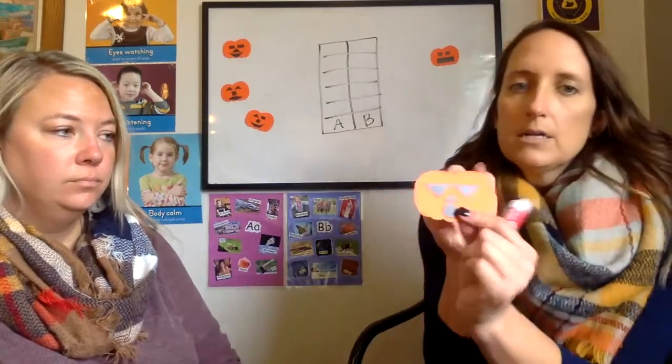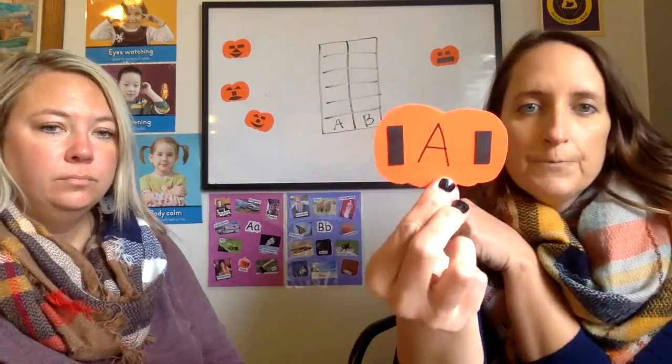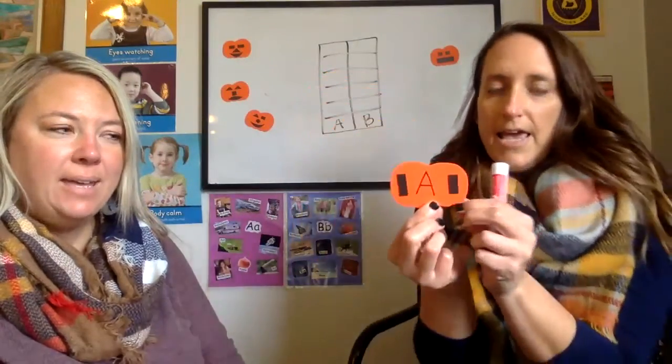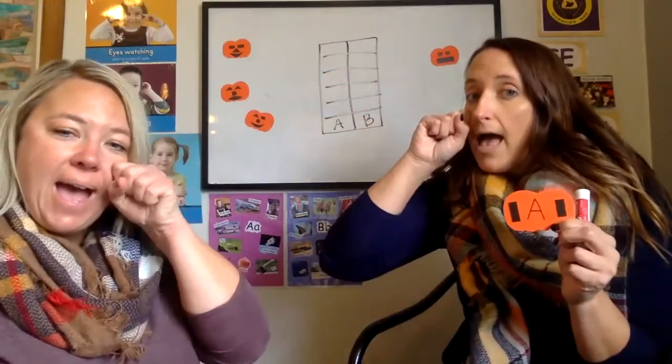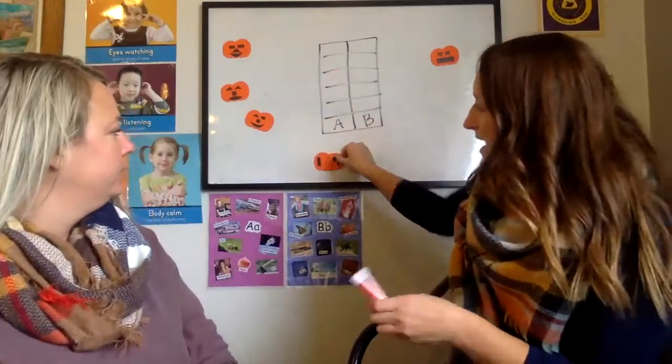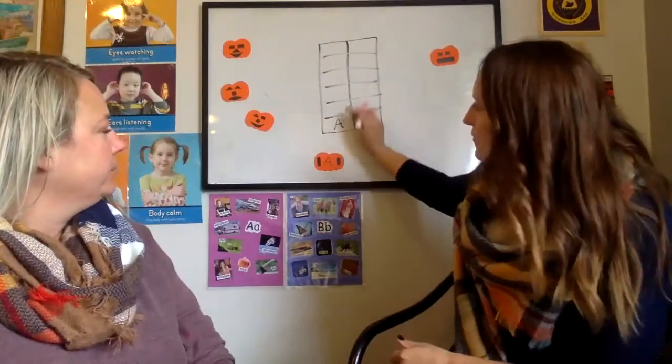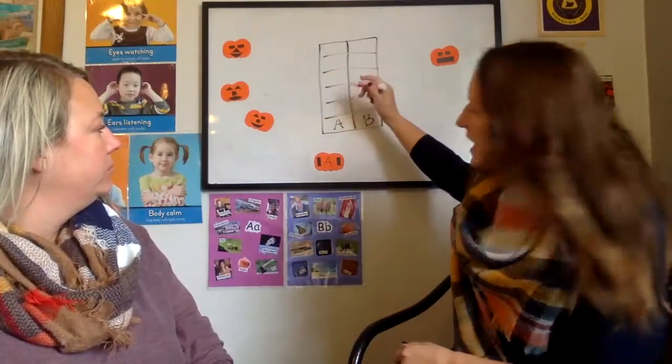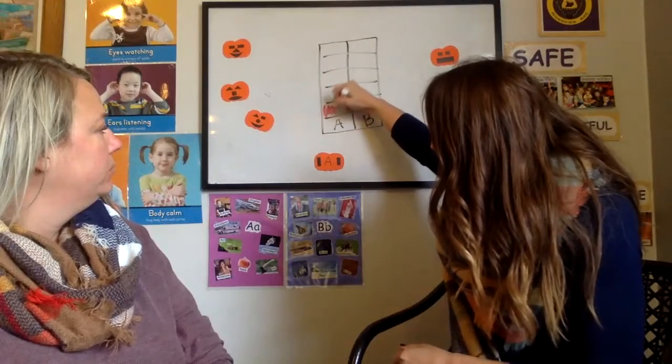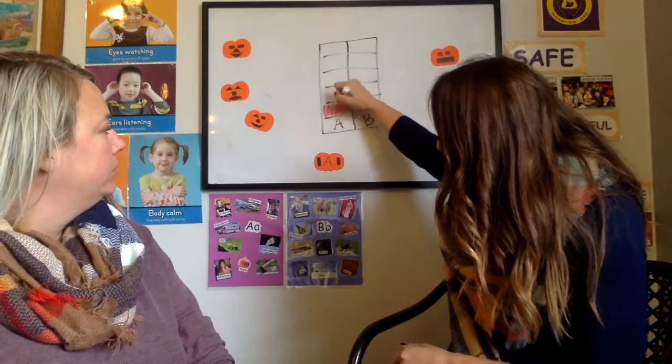This silly pumpkin has a letter. What is that? Letter A, and A says A, A, A. So we found a letter A, so I'm going to color on our graph the first box right here, right above the A. I'm going to color it in. All right.